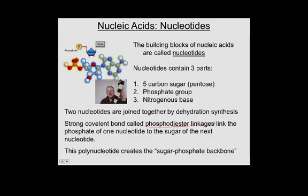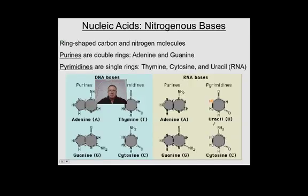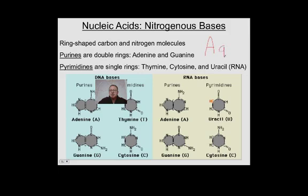Our next main idea focuses on nitrogenous bases. Nitrogenous bases are ring-shaped carbon and nitrogen molecules. There are two general classes: purines are double rings and include adenine and guanine. A helpful mnemonic: take the first letters A and G together — that spells AG, the chemical symbol for silver. So you can remember 'pure silver' to recall that purines are adenine and guanine.